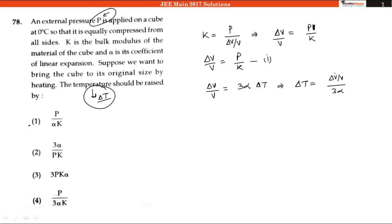Substituting the value of ΔV/V from equation 1, we get ΔT = P/(3αK), which is option number 4.